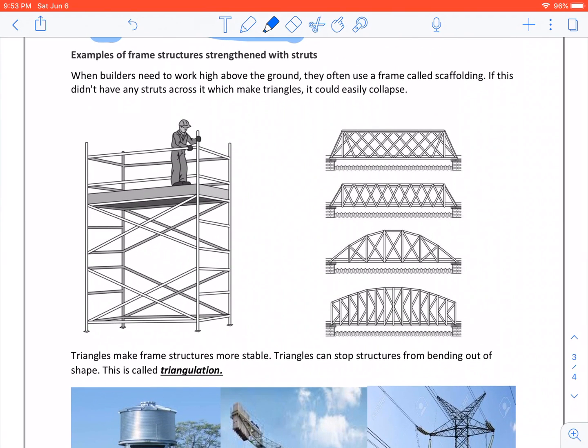Examples of frame structures strengthened with struts. When builders need to work high above the ground, they often use a frame called scaffolding. If this didn't have any struts across it to make triangles, it would easily collapse. See the triangles?